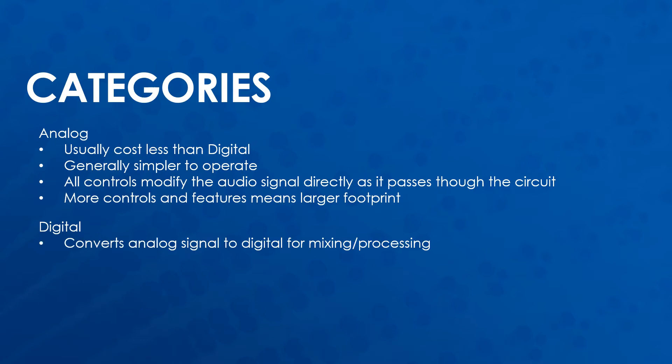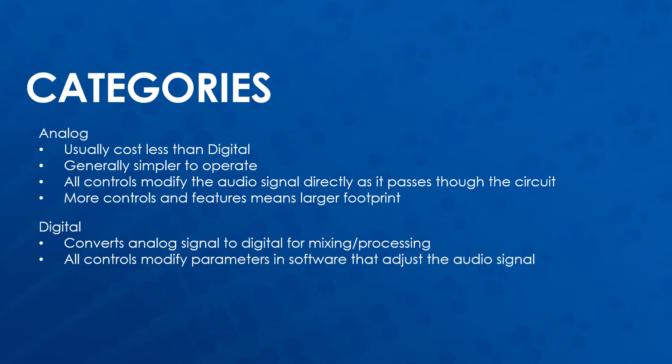Digital mixers convert analog signal to digital signal for mixing and processing. All controls modify parameters in software that then adjust the audio signal. This means that one control can perform the same function for any channel on the mixer, depending on which channel is selected. Because of this, lots of controls and features can be present in the mixer, but the footprint remains small since the same physical controls can perform multiple functions.